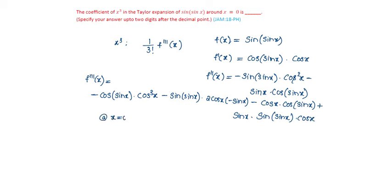At x equal to 0, the function becomes: let us take 1 by 3 factorial of the derivative. This will be minus 1 minus 1.